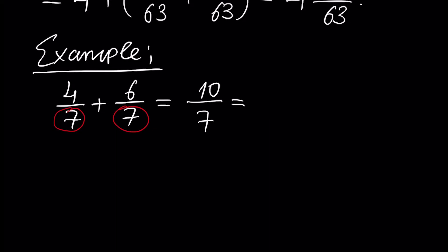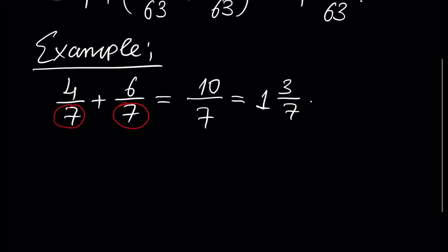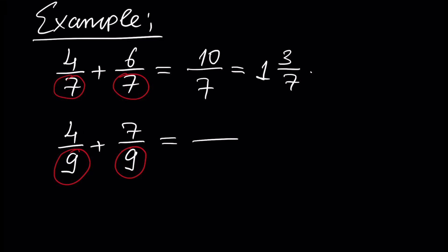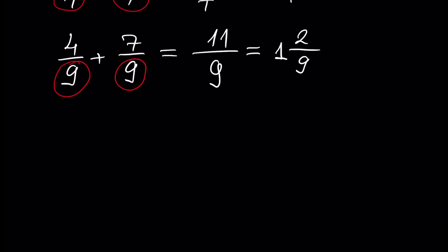Another example: assume 4 over 9 plus 7 over 9. Since the denominators are the same, we just add the numerators. The denominator stays the same and we get 11 over 9, which can be written as 1 and 2 over 9.